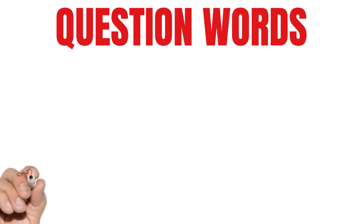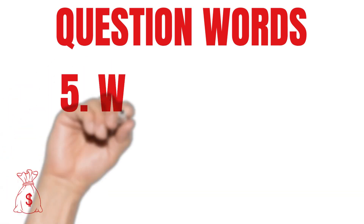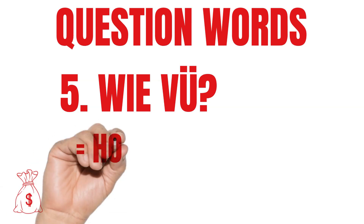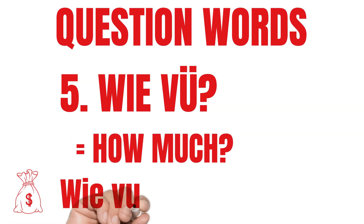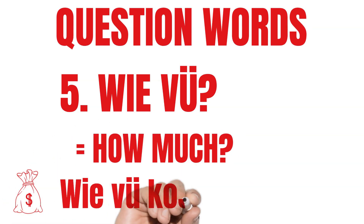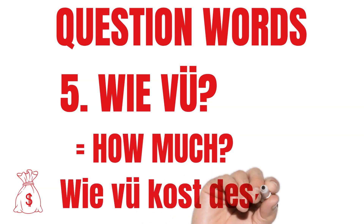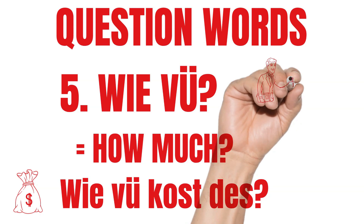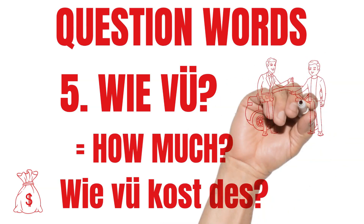It may be useful to take a look at the special form of wie, namely "wie viel." Wie viel means "how much." For example, "Wie viel kostet's?" in Austrian German. In standard German: "Wie viel kostet das?" In English: "How much is it?"